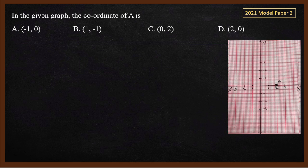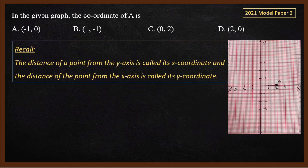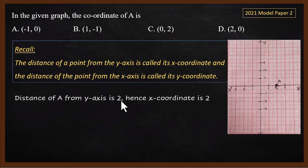Let's go to the next question — another model paper question. They have asked: in a given graph, find the coordinate of point A. We will use the fact that the distance from the y-axis is the x-coordinate and the distance from the x-axis is the y-coordinate. The distance from the y-axis is 2, so the x-coordinate is 2.